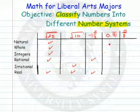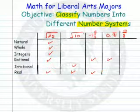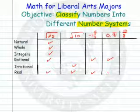Here we have a repeating decimal, repeating decimal. Is it natural? No. Whole? No. Integer? No. Rational? Yes, it is. Irrational? No. Real.